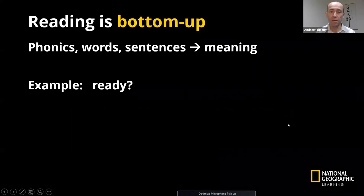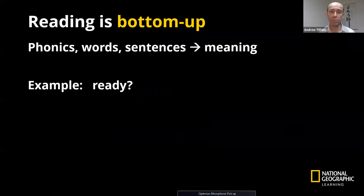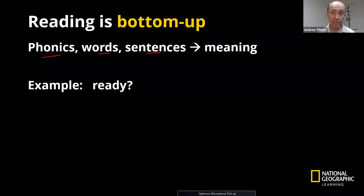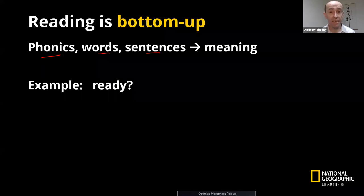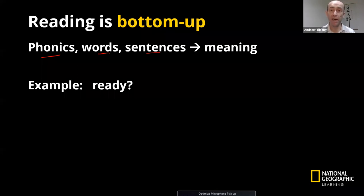The first one is bottom-up. We start with small things like phonics, words, and sentences. Some of you will do this when you are teaching reading — you spend a lot of time teaching phonics and blending, and if you see the words on the page, then you can figure out how to say the word, put the sentence together, and get some meaning out of it. I'm going to give you an example of how bottom-up reading works by looking at things one piece at a time. What I'm going to show you is not for a young learner — this is really for you as an adult.